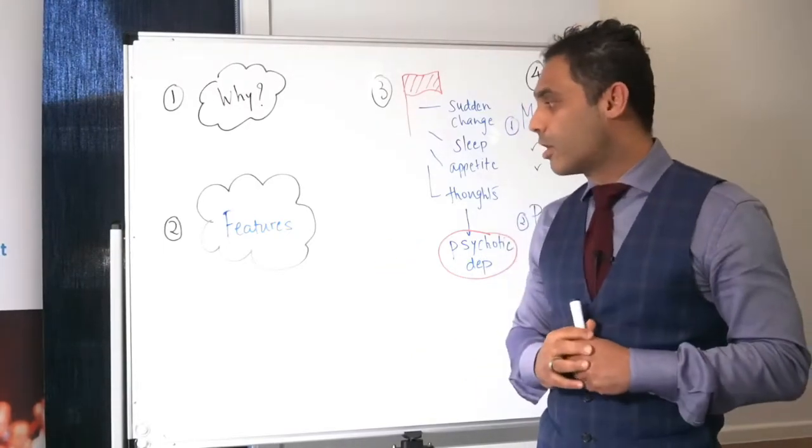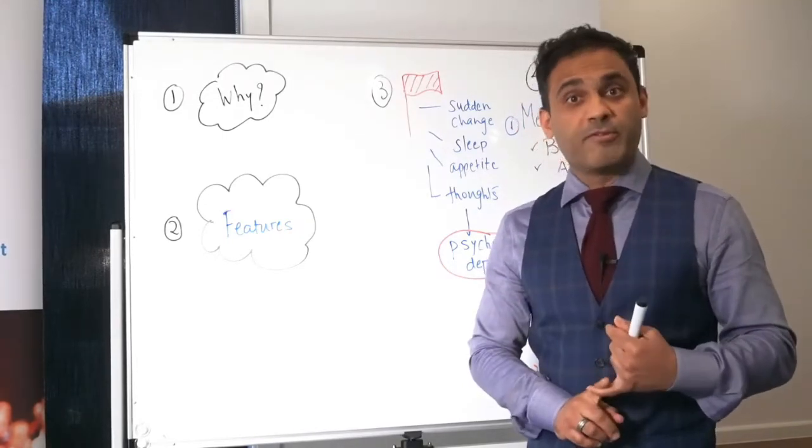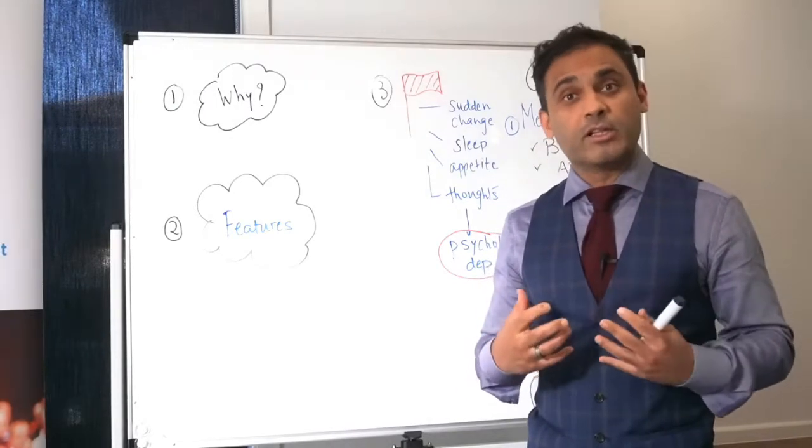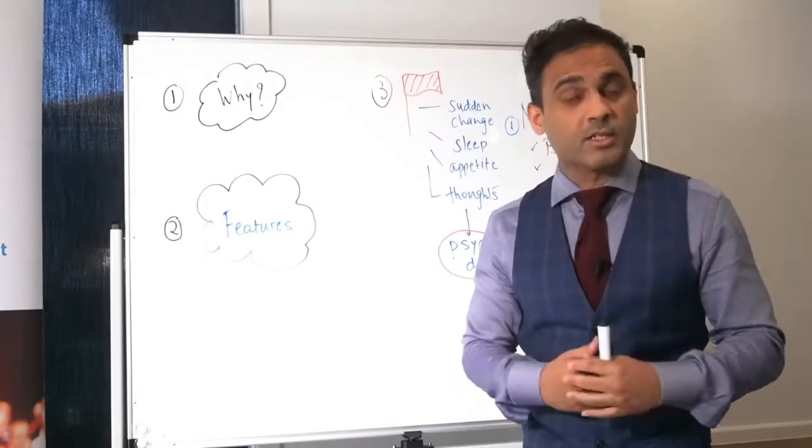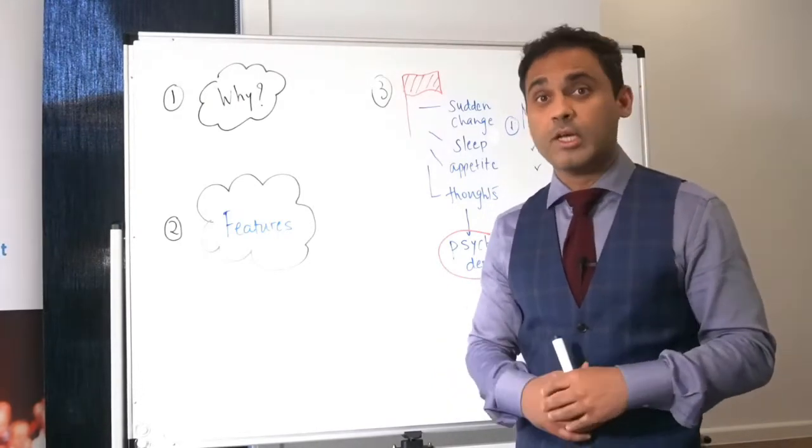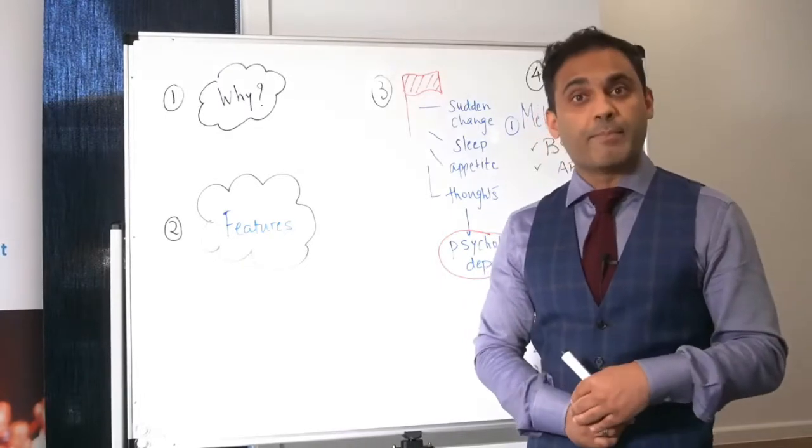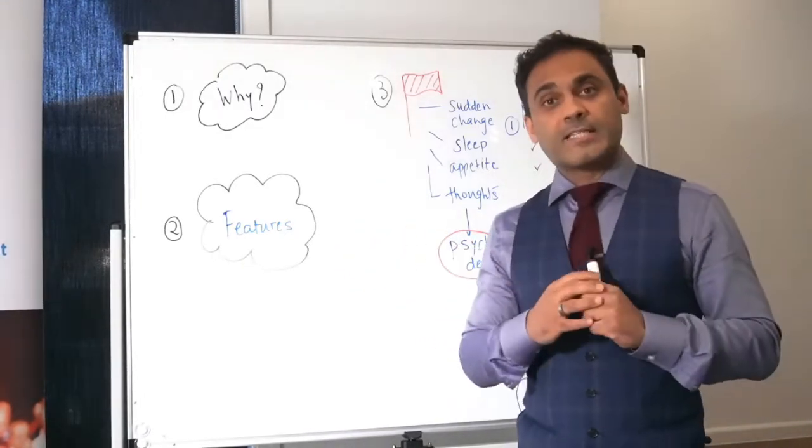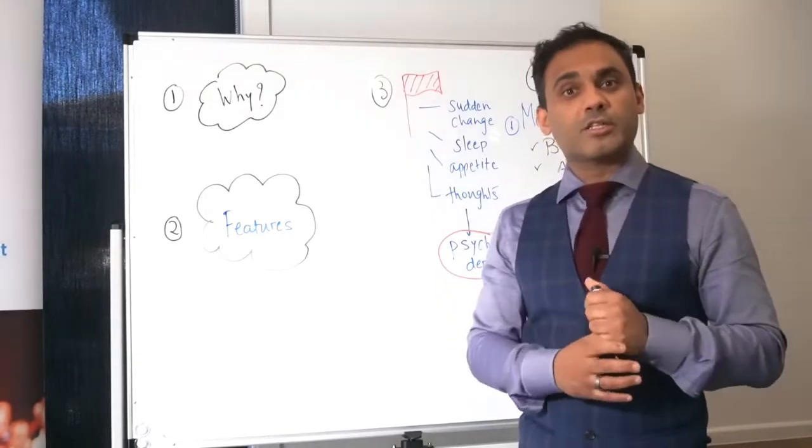The other features are there may be physical changes, so constipation may be found, low blood pressure, in females menstrual irregularities, these are some of the physical changes. Loss of weight is another really important one, can occur on its own but also due to loss of appetite. The other aspect here to consider is that there is a significant biological weighting in both melancholic and psychotic depressions.